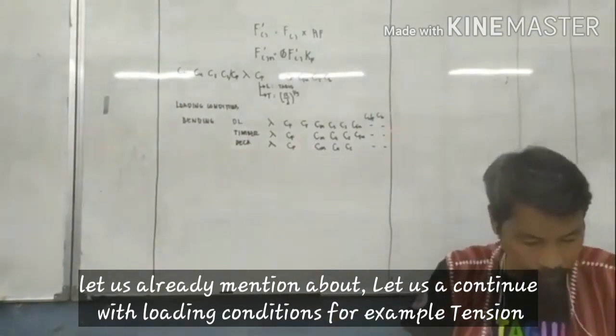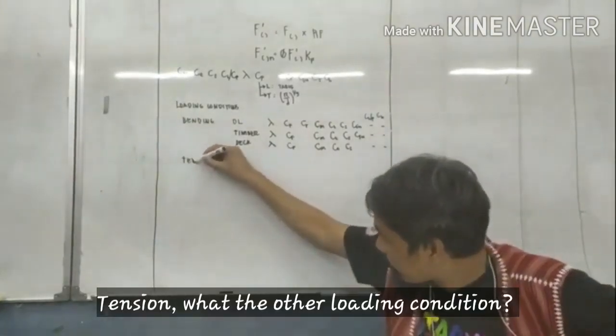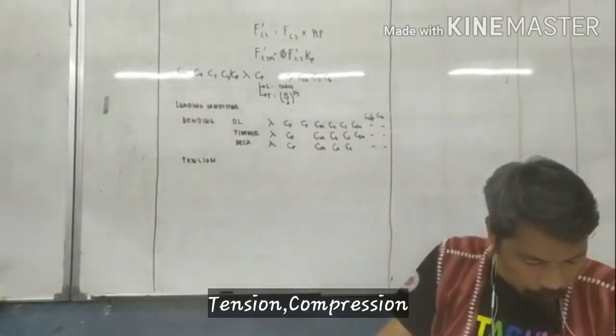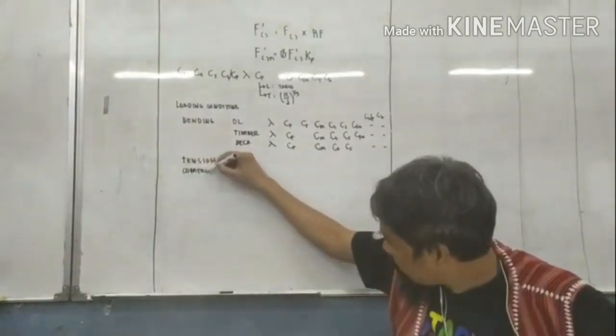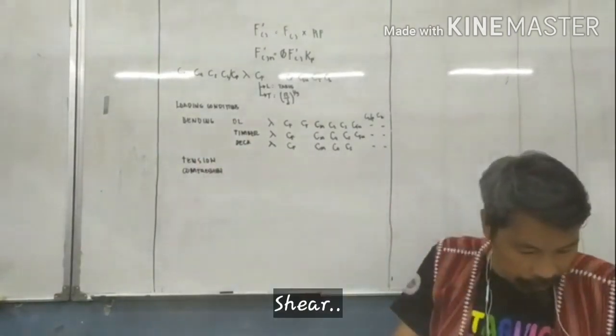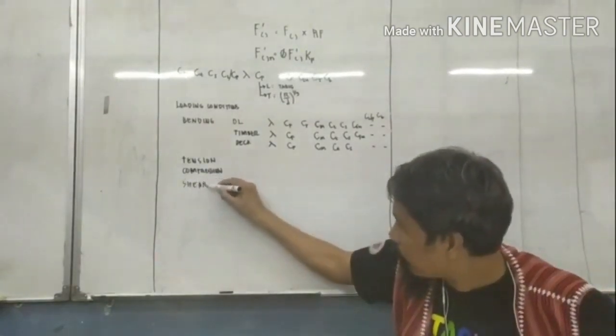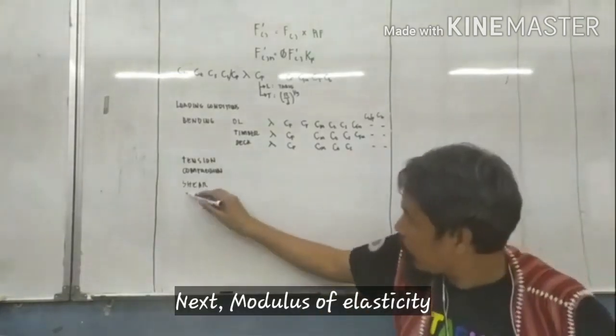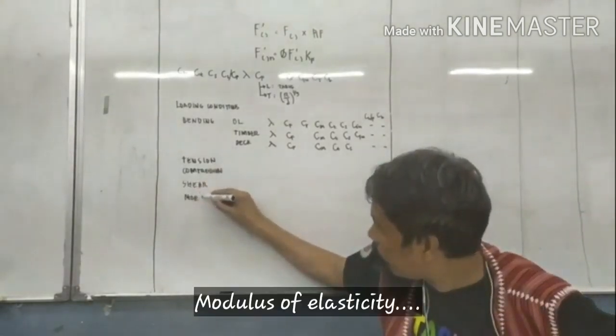So let us continue with other loading conditions for some code. Tension. Tension. What are the other loading conditions? Tension, compression. What else? Shear? Right, shear. Tension. There are modulus of elasticity. Modulus, modulus of elastic.